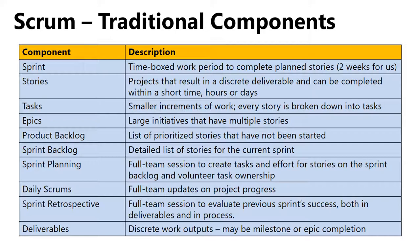The sprint backlog is the detailed list of stories for the current sprint. Sprint planning and daily Scrum calls keep the work on track. The sprint retrospective is a full-team session held to evaluate the previous sprint's success in both deliverables and process. Deliverables are the output, either by milestone or by epic completion. Memorize these definitions as your homework.